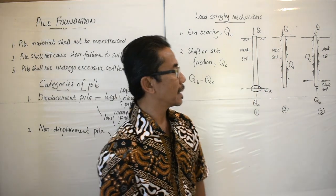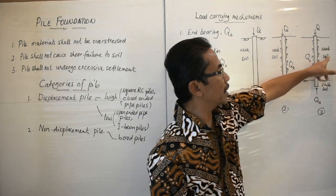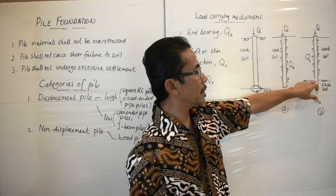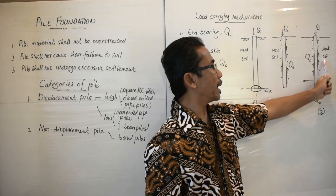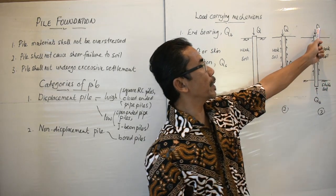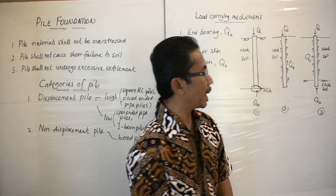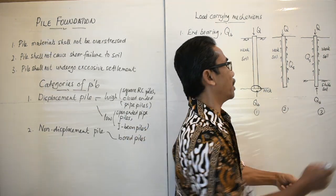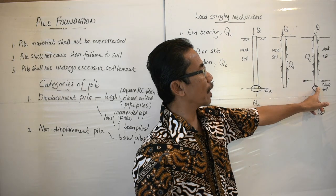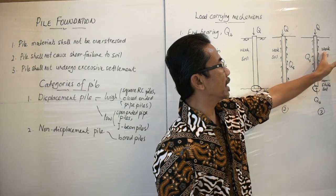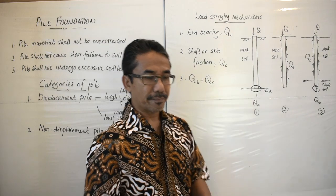The third case is when the top layer is weak soil underlain by stable soil. When the pile penetrates the stable soil and we apply compressive load Q, the load is carried by two mechanisms: part of the load is carried by end bearing Q sub B, and part is carried by shaft or skin friction. So in this case, the load is carried by both end bearing and shaft friction.